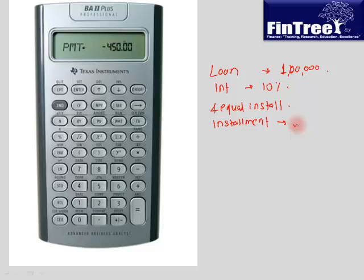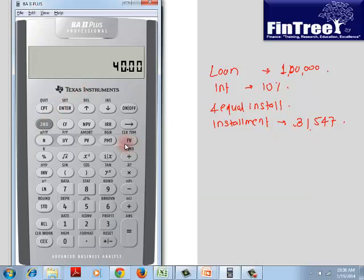So how do you get that installment? Second, clear TVM. 100,000 is your present value, interest rate is 10. Compounding is annually, so we simply say 10 I/Y, 4 N, compute payment. The installment amount that we have to pay is 31,547.